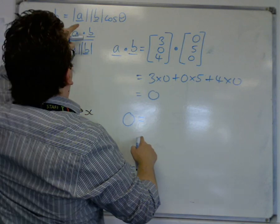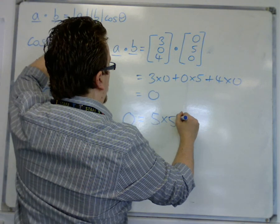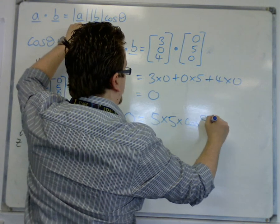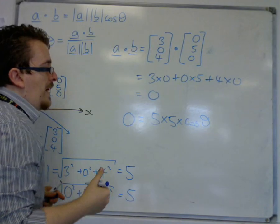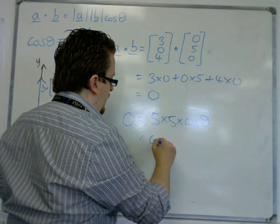So I get 0 is equal to 5 times 5 times cos theta. So that must mean that cos theta is 0.